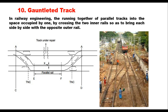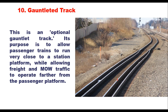A go-and-let-it track is a parallel track provided as a diversion when a section of the main track is closed, for example under repair. It can also be provided near stations as an optional track to allow passenger trains to run close to the station platform while allowing freight and other traffic to operate farther from the passenger platform. If the platform is on one side, passenger trains are taken to the lines closest to it while freight trains continue on the main track away from the platform.